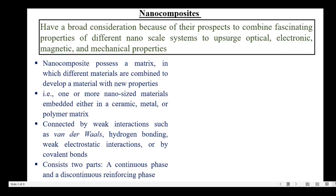A nanocomposite is a combination or a matrix in which different materials are combined to develop a material with new properties. In a nanocomposite, one or more nano-sized materials are embedded either in a ceramic, metal or polymer matrix. The different constituents are connected by weak interactions such as van der Waals, hydrogen bonding, weak electrostatic interactions or by covalent bonds.